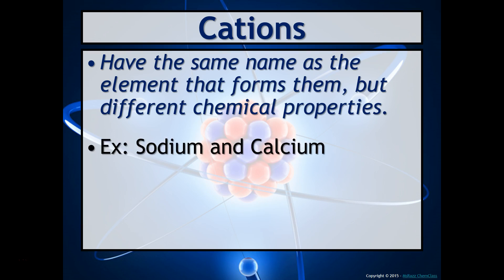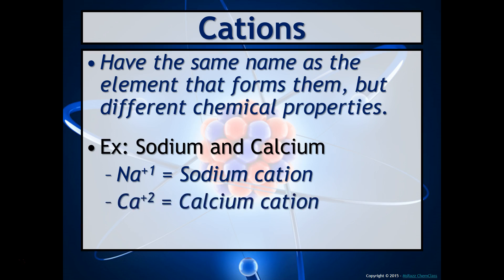For example, sodium and calcium. Sodium has a 1-plus charge, and so it's called the sodium cation. Calcium is 2-plus, and so it's called the calcium cation.